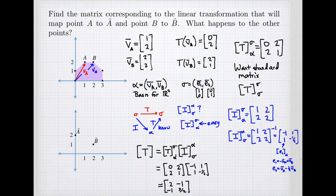I can now write down my solution. I have my matrix T with columns (0,2) and (2,1), multiplied by my change of basis matrix with columns (-1,1) and (1,-1/2). This product gives me my standard matrix. The first column is the image of (1,0): the vector (1,0) gets sent to (2,-1). The second basis vector (0,1) is sent to (-1, 3/2). This standard matrix allows me to calculate all other images.